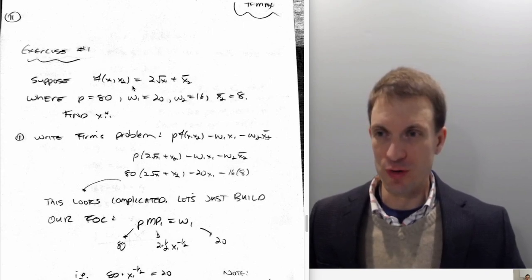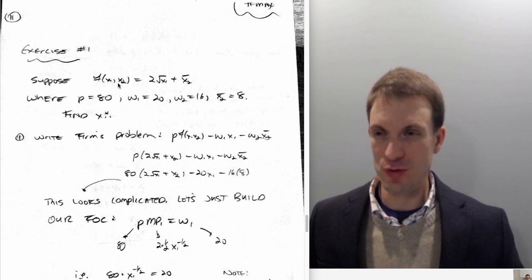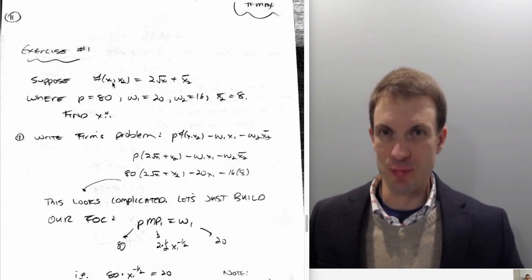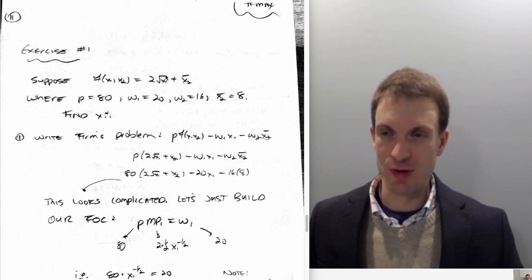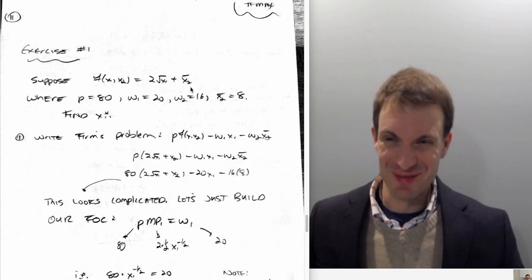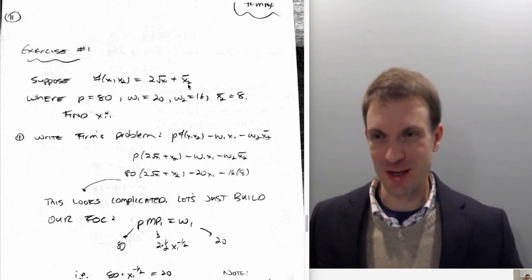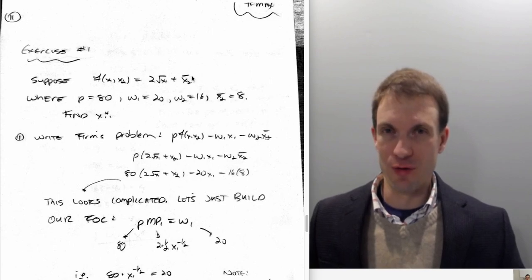I'm going to start with a production technology where x1 and x2 are the amounts of inputs. Two times the square root of x1 plus x2 is going to be the output for a given amount of input 1 and input 2. This bar over the top means we're in the short-run world because I'm going to be fixing my use of input 2.